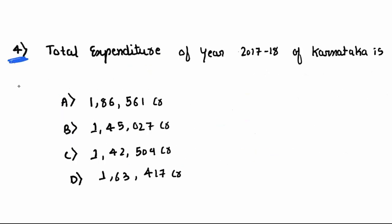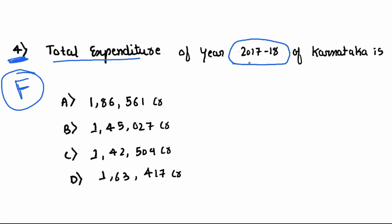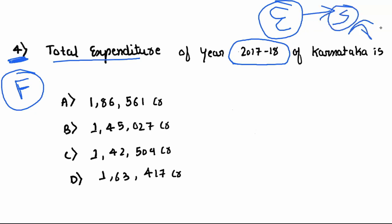Fourth question — a factual question you must remember: The total expenditure of Karnataka for the year 2017-18. Our Finance Minister and Chief Minister is Siddaramaiah. The total expenditure quoted for 2017-2018 was ₹1,86,561 crore.